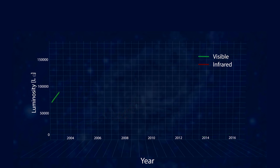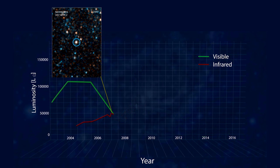Here's a graph of the star's luminosity in visible and infrared light over time. In 2007, Hubble took this picture of the star.